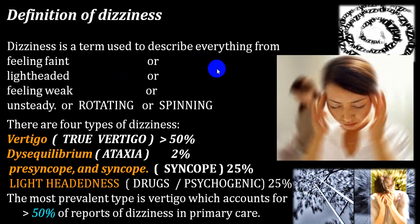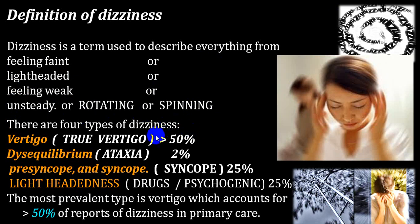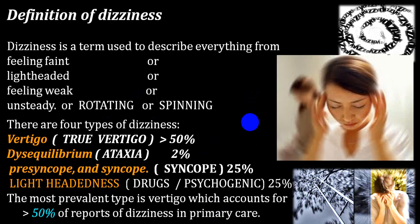Dizziness is a term used to describe everything from a feeling of impending faint, light-headedness, weakness, unsteadiness, rotating sensation, or spinning sensation. Out of one hundred cases of dizziness, vertigo accounts for more than 50 percent; presyncope or syncope is around 25 percent; ataxia accounts for about 2 percent; and light-headedness, very commonly due to drugs — particularly sedatives, tranquilizers, cough syrups, antihistaminics — as well as hypoglycemia and psychogenic causes, accounts for 25 percent of cases.